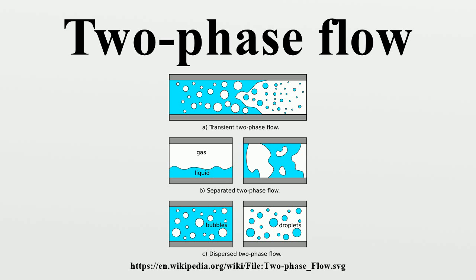Sometimes even three-phase flow is considered, such as in oil and gas pipelines where there might be a significant fraction of solids. Other interesting areas where two-phase flow is studied include climate systems such as clouds, and in groundwater flow, in which the movement of water and air through the soil is studied. Other examples of two-phase flow include bubbles, rain, waves on the sea, foam, fountains, cryogenics, and oil slicks.